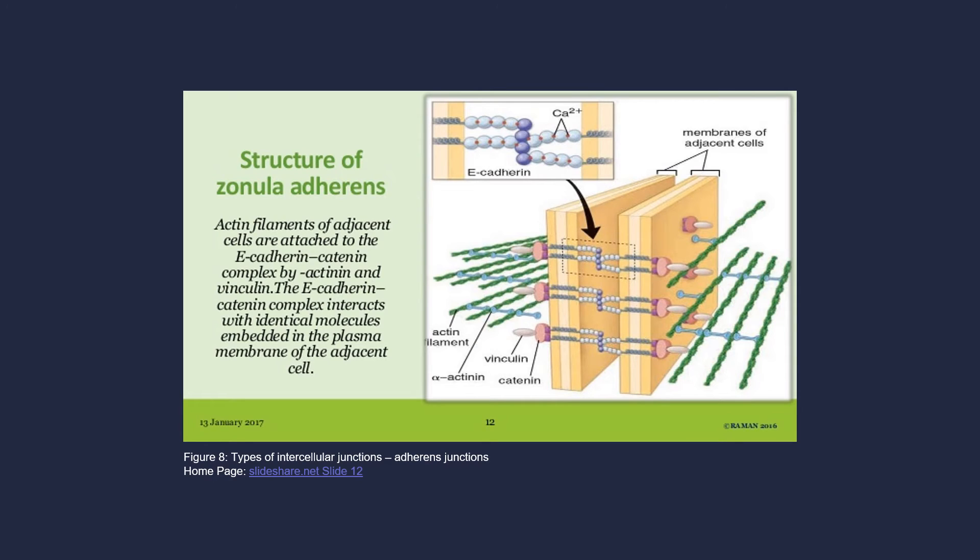Adherens junctions, or zonula adherens, are found in epithelial cells and form a glue-like contact between the cells or between the cells and the extracellular matrix. Adherens junctions maintain the integrity of tissue structure. They also maintain tissue homeostasis and increase cellular communication and signaling conduction.